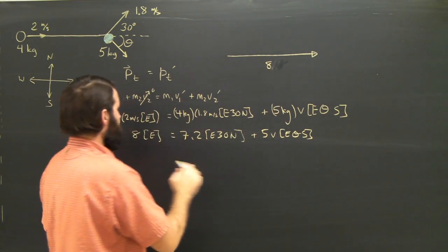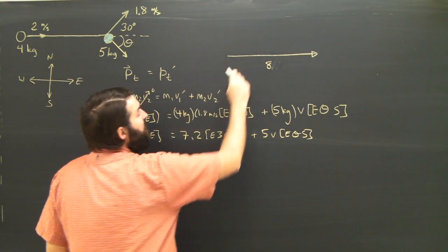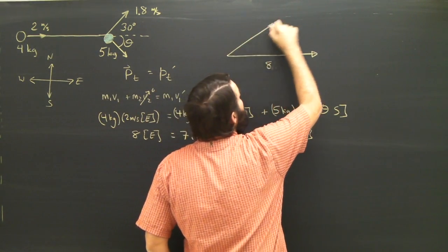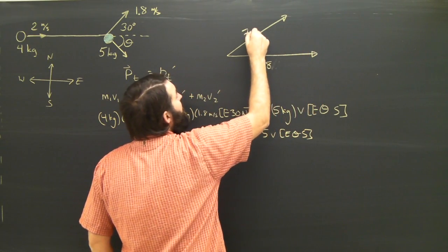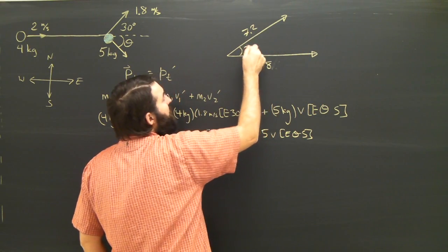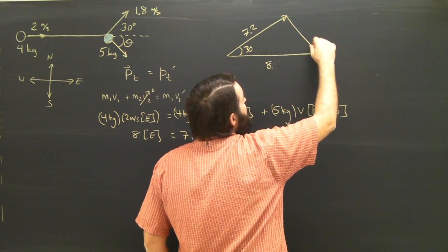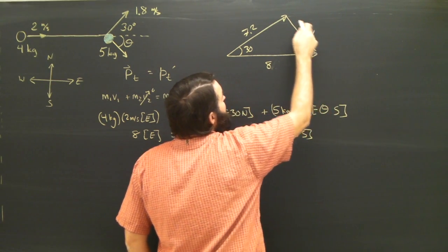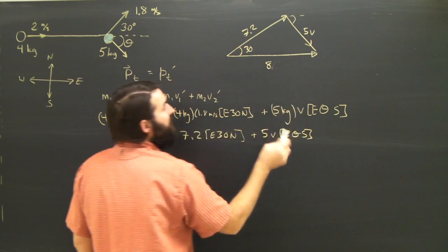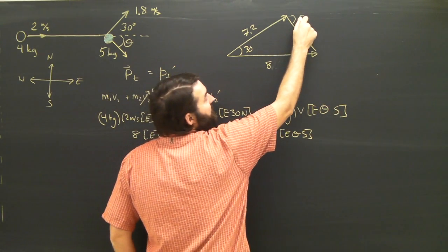There's 8 to the east. 7.2 east 30 north plus 5 V in an unknown direction. But I've said it was east theta south, so this is theta.